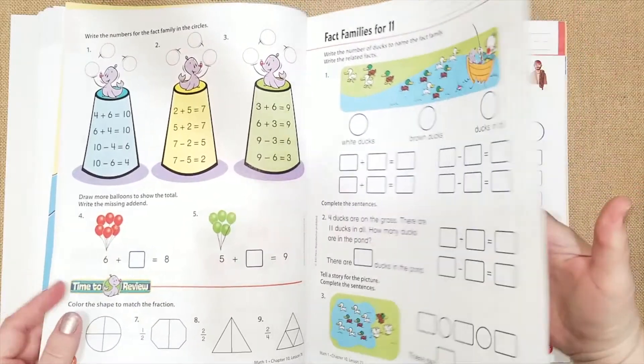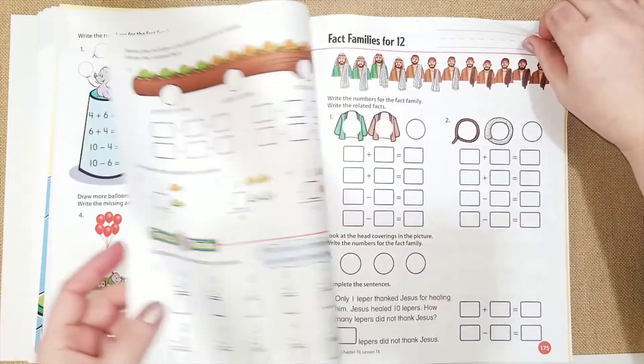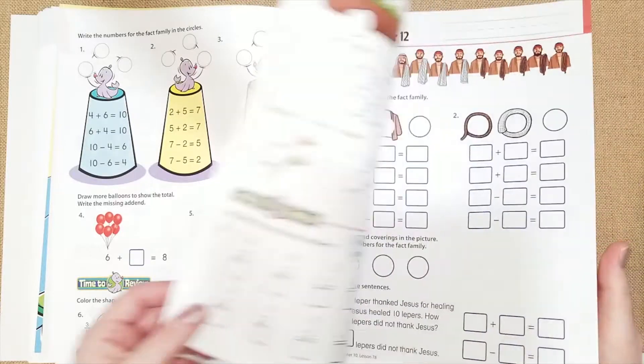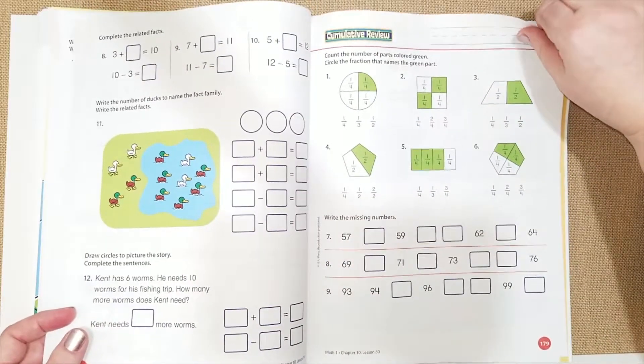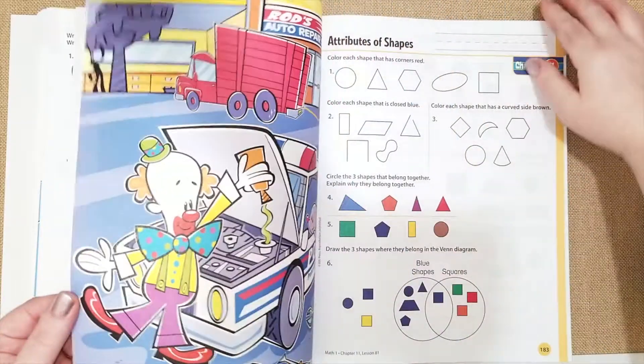All right. So they're doing fact families for 11 and 12. And then they're going to be reviewing the fractions.